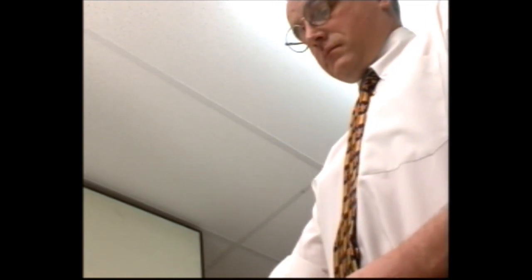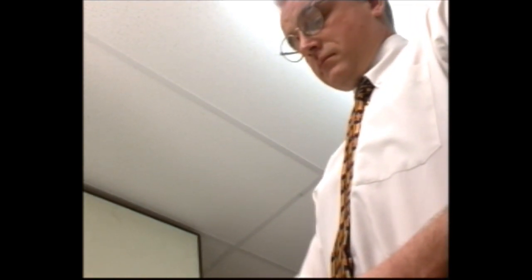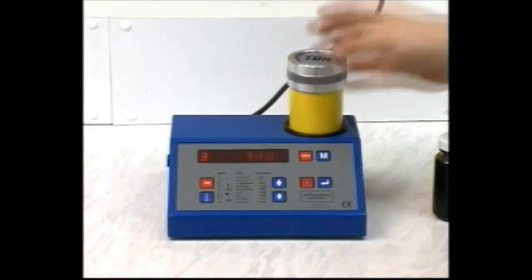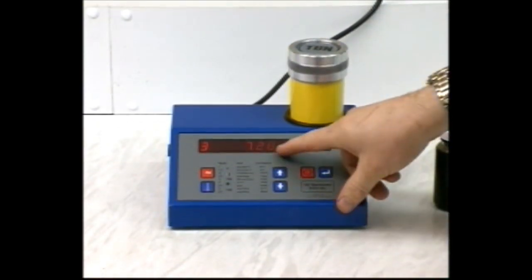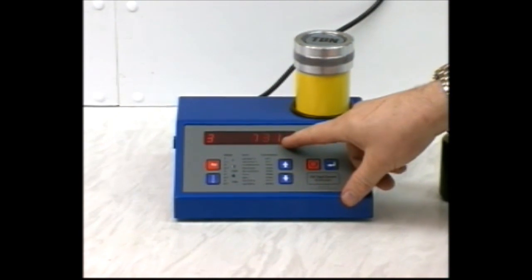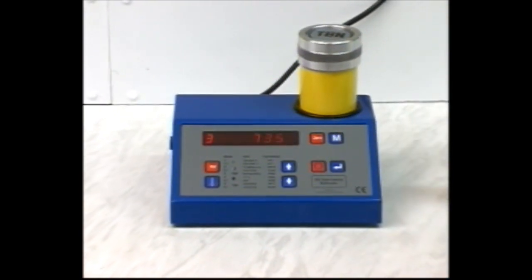To test for TBN depletion in used oil, repeat the procedure just outlined, replacing the new oil with an equal amount of used oil. The figure displayed on the unit at the end of the procedure is the test value. This will be used for calculating TBN depletion.